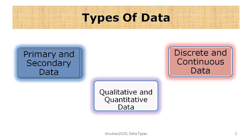Data can be of different types. It could be classified as qualitative data and quantitative data, discrete data, continuous data, primary data, secondary data, and so on. There are different types of data based on different bases of classification.